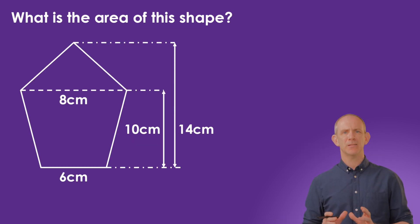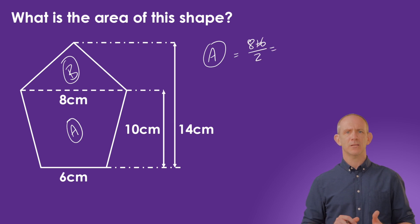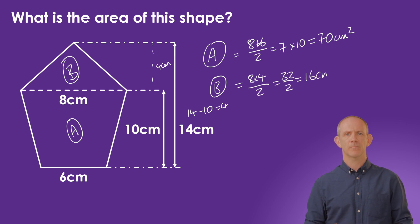In this problem, we've got a pentagon, but we can cut it into a triangle and a trapezium. Let's label each of these to show how we are calculating the answer. Section A will be the trapezium, and section B will be the triangle. For section A, we need to do eight plus six divided by two, which equals seven. Then we times that by the height of 10 centimeters to get 70 centimeters squared. If the base of the triangle is eight centimeters, we need to calculate the height. So we're going to do 14, take away 10 to give four centimeters. Then we'll do eight times four divided by two, which would give us 16 centimeters squared. If we added those two together, we'd get 86 centimeters squared.